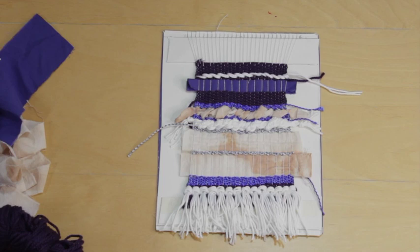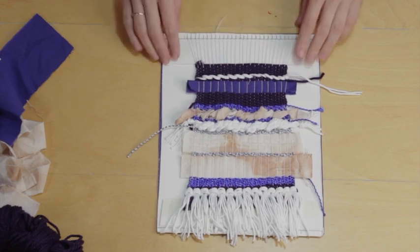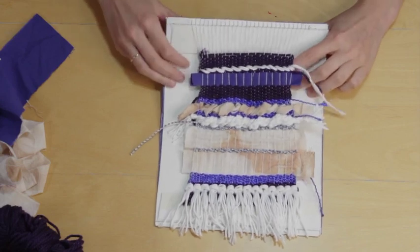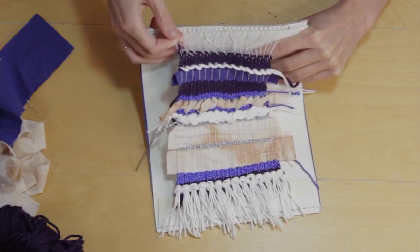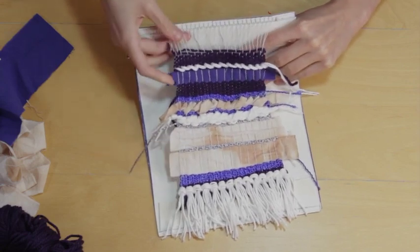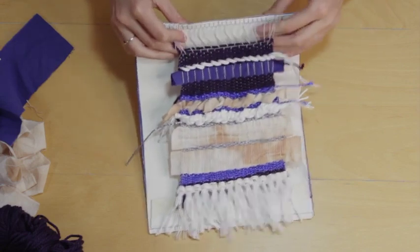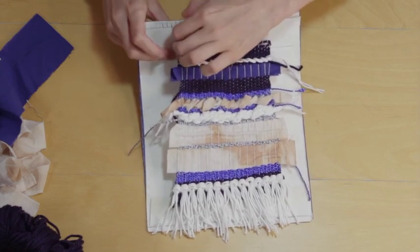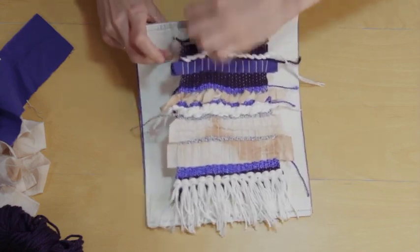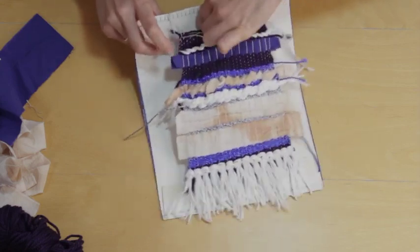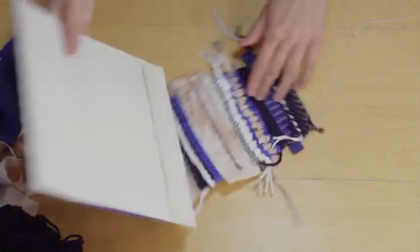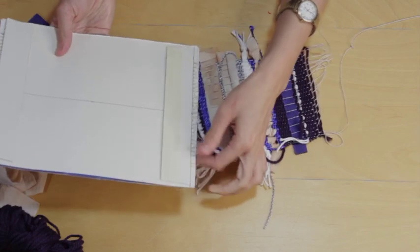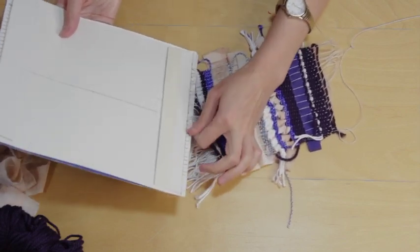So now I'm going to show you how to finish off the weave. We're going to start by needing to take it off the board. So to do that, what you'll want to do is really carefully just bend your loom and lift at the top. You can lift each of those loops off the loom, and then we can do the same at the bottom of our board.